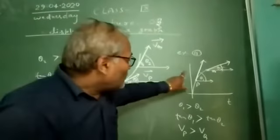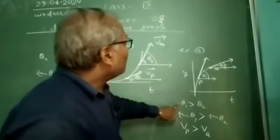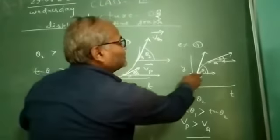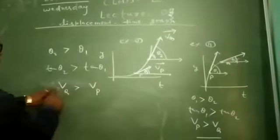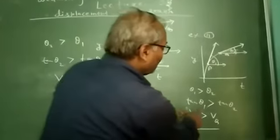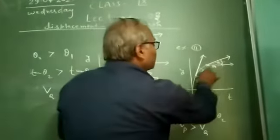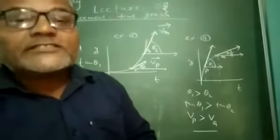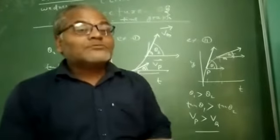By the help of this graph, theta 1 is greater than theta 2, meaning the velocity at point P is greater than that at Q. Because with time the velocity decreases here, this graph represents the velocity of a body going on in decreasing order. By the help of this concept, we can solve any problems related to this graph.